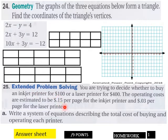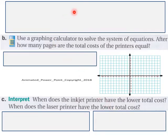And then 25, extended problem solving here. Write a system of equations describing the total cost of buying and operating each printer up here. Nine points here, page one, and that goes over into here from the previous.